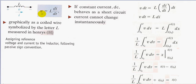The voltage relationship is V equals L·dI/dt. Two points to remember: under constant source DC, or steady state, inductors behave as a short circuit. And the second point is that current cannot change instantaneously through an inductor.